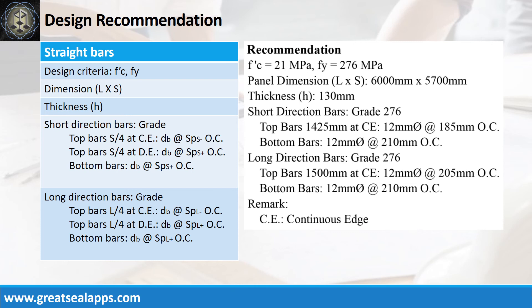Design recommendation as follows. fc' equals 21 MPa. fy equals 276 MPa. Panel dimension is 6,000 mm by 5,700 mm. Thickness is 130 mm. Short direction bars grade 276: top bars 1,425 mm at continuous edge, 12 mm bar at 185 mm on center; bottom bars 12 mm bar at 210 mm on center. Long direction bars grade 276: top bars 1,500 mm at continuous edge, 12 mm bar at 205 mm on center; bottom bars 12 mm bar at 210 mm on center.